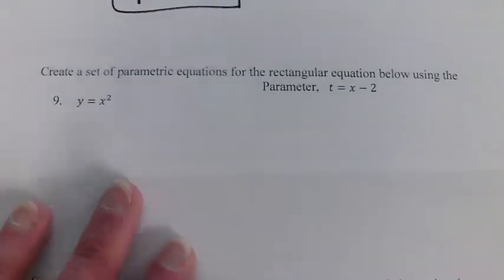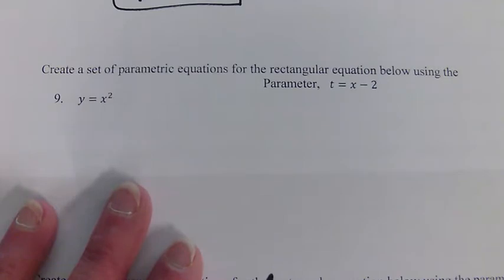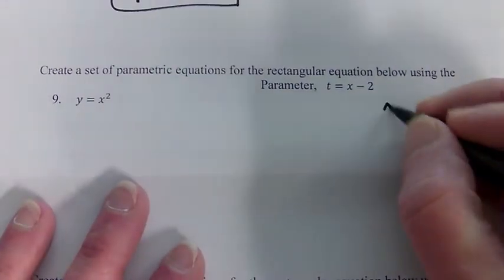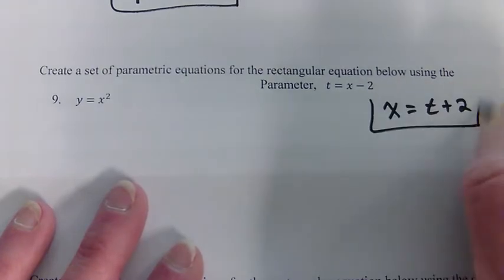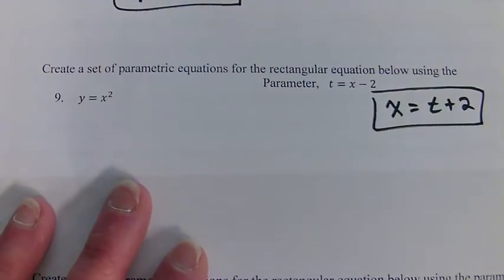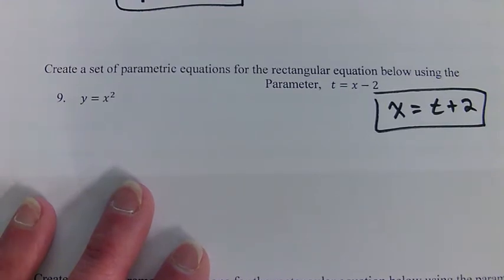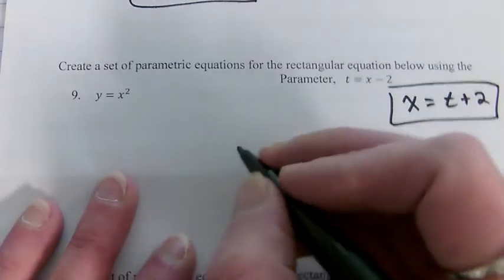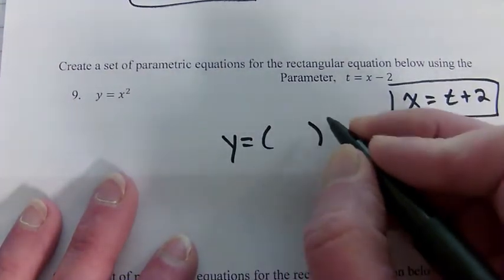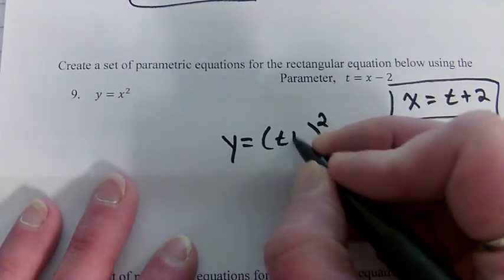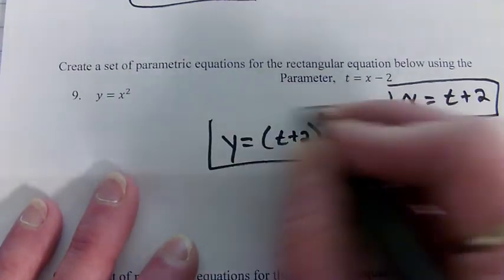Let's try another one. t equals x minus 2. Okay, so x equals t plus 2. One done. Now I need to rewrite y in terms of t. And y is x squared, so I take x and square it. Done.